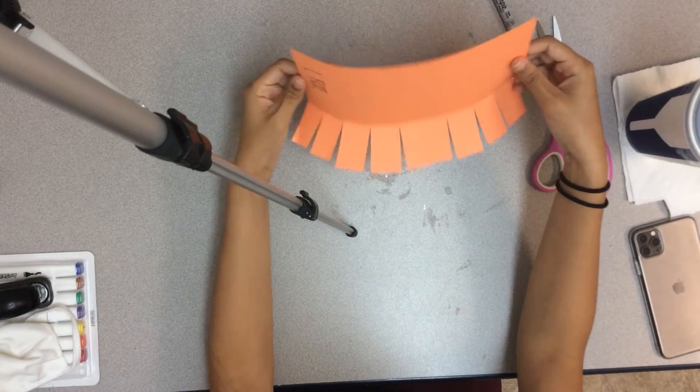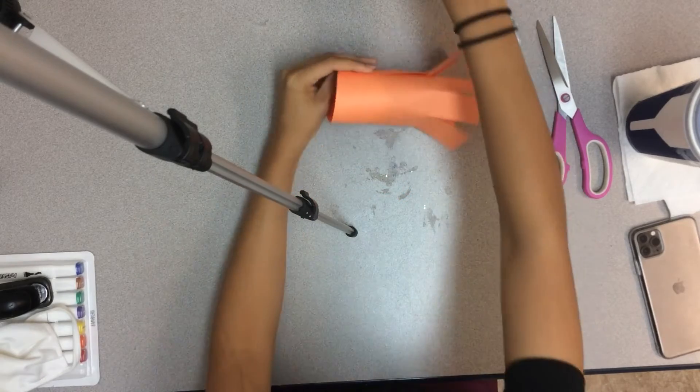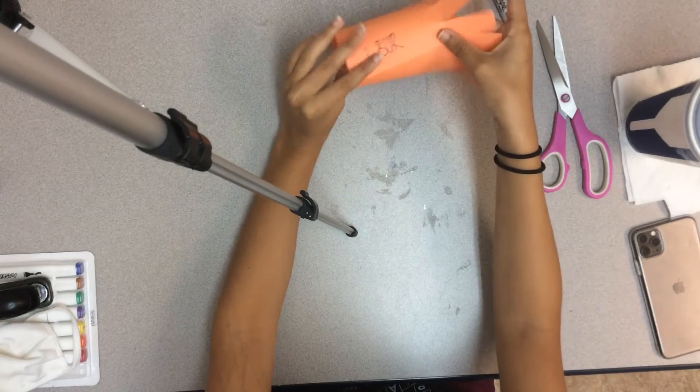Next, you're going to bend your paper into a circle, grab some tape, and tape it.